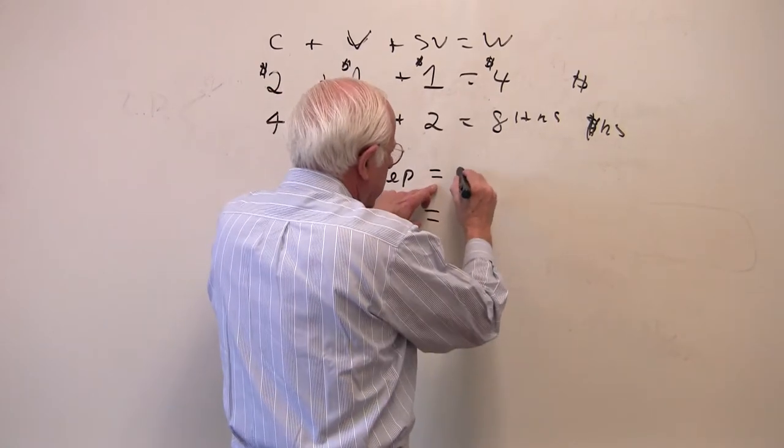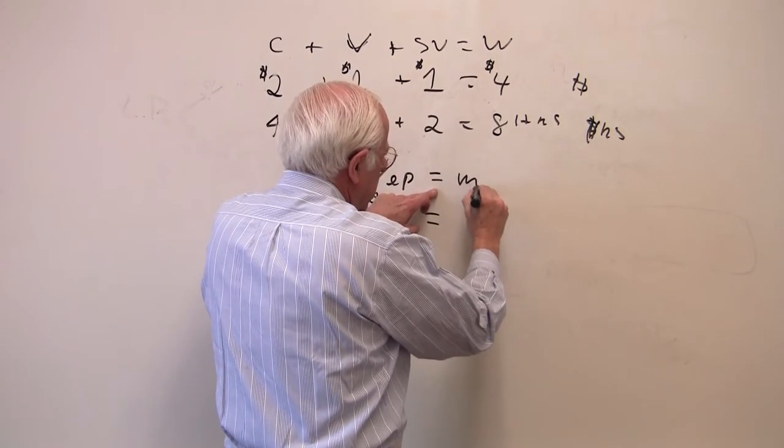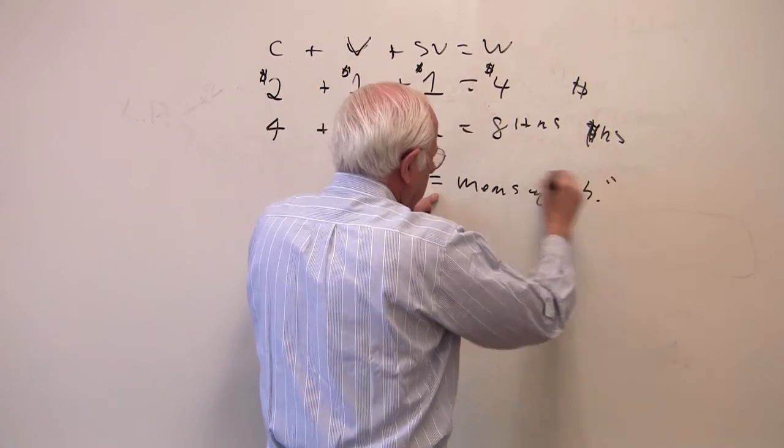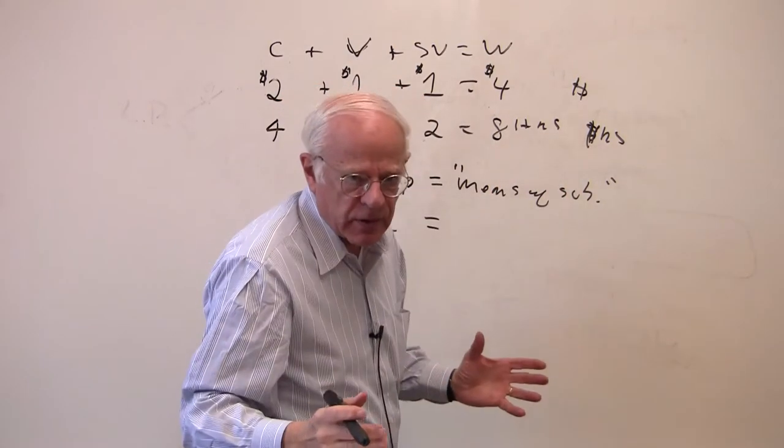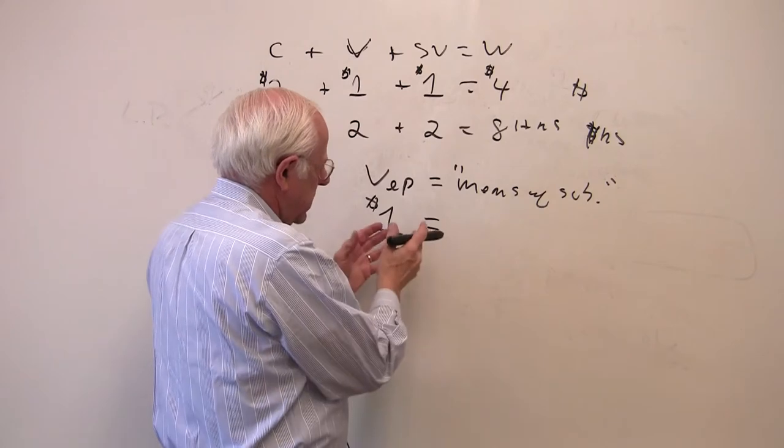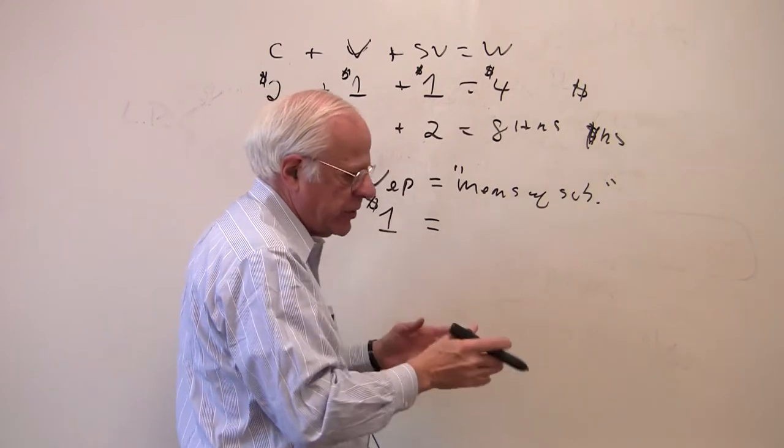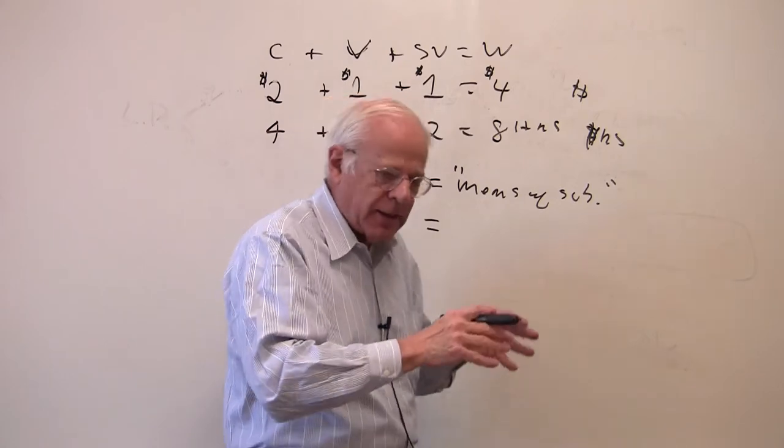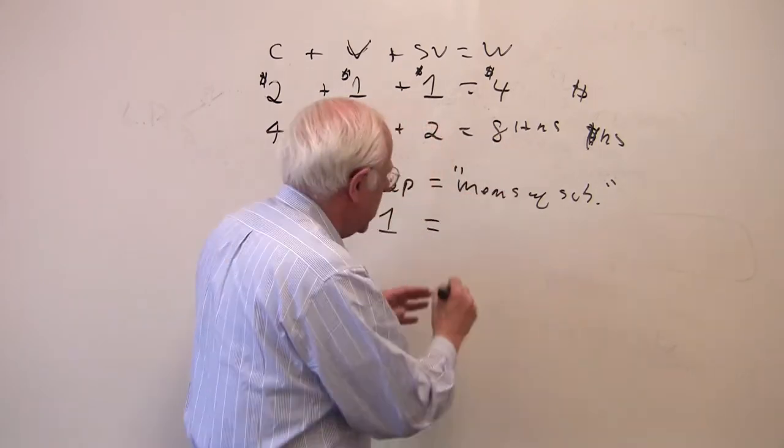So the worker goes out and buys, purchases means of subsistence. That's in your reading. Consumer goods, the value of which is a dollar. So the worker gets a buck, goes out and buys, let's say, apples. Let's assume apples are the consumer goods. Well, the cost of an apple is four dollars.